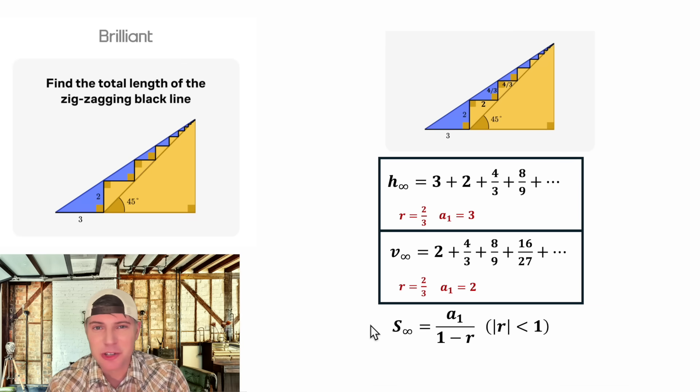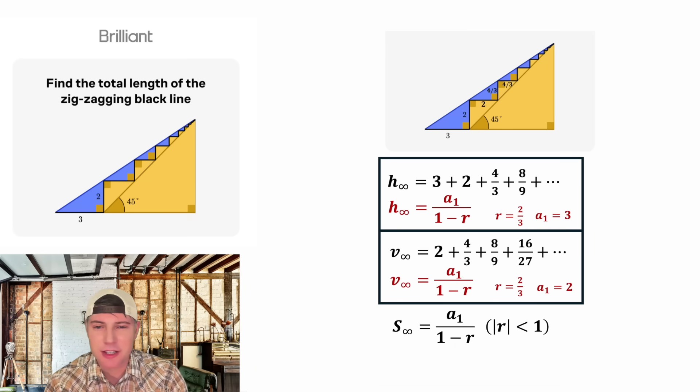Now to evaluate these we're going to use the infinite series formula. It says the infinite sum is equal to a sub one divided by one minus r, given that the absolute value of r is less than one. This formula will give you the sum of the infinite terms added up. So let's apply it to each of these.